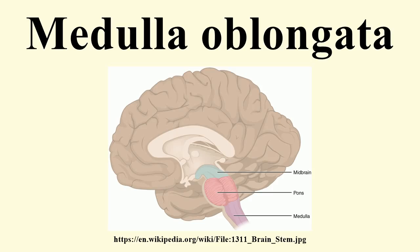These fasciculi end in rounded elevations known as the gracile and cuneate tubercles, caused by masses of gray matter known as the gracile nucleus and the cuneate nucleus. The cell bodies in these nuclei are the second-order neurons of the posterior column medial lemniscus pathway, and their axons, called the internal arcuate fibers or fasciculi, decussate from one side of the medulla to the other to form the medial lemniscus.